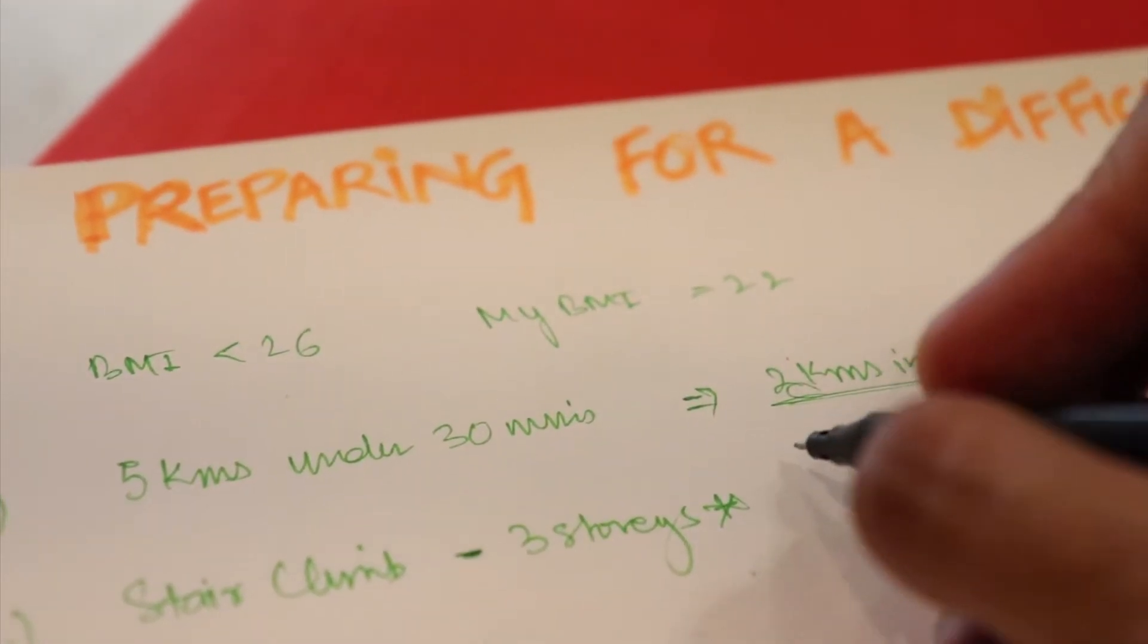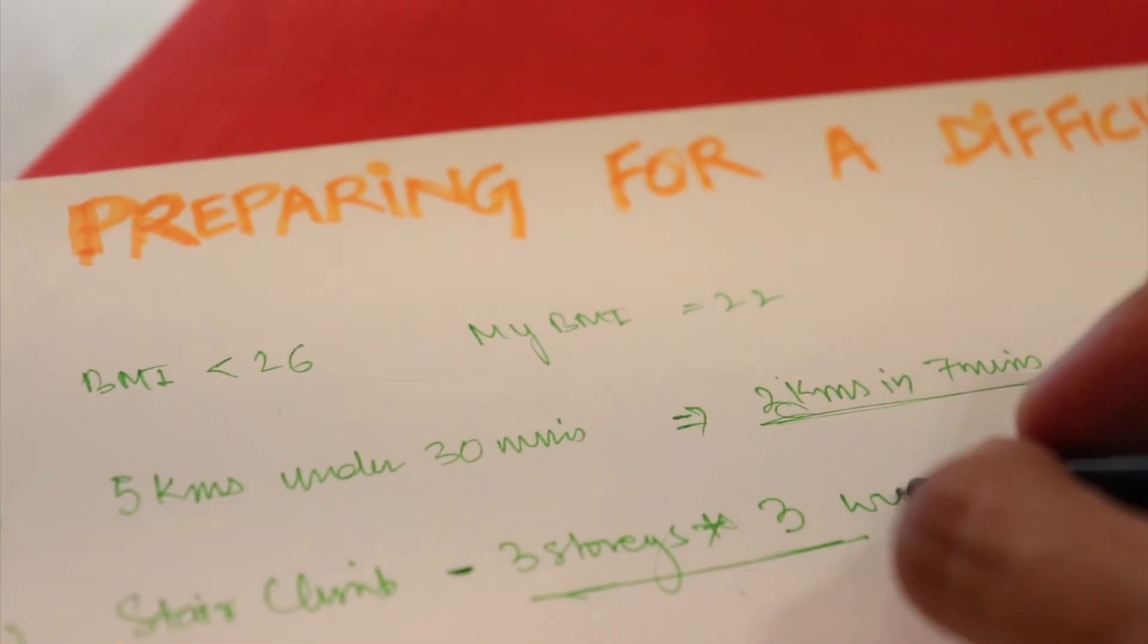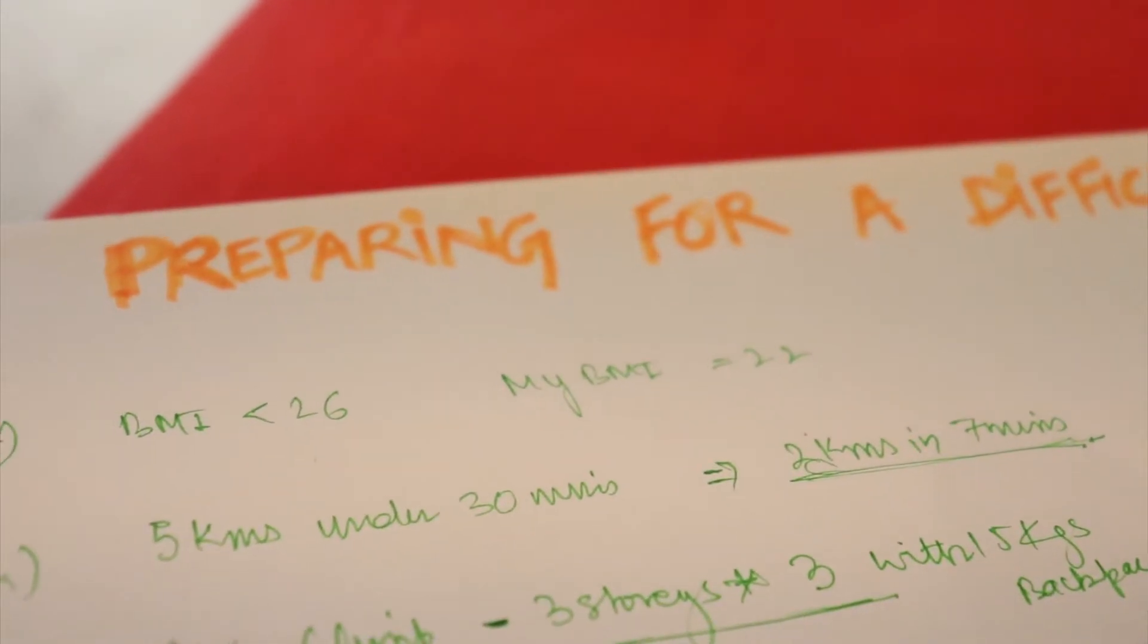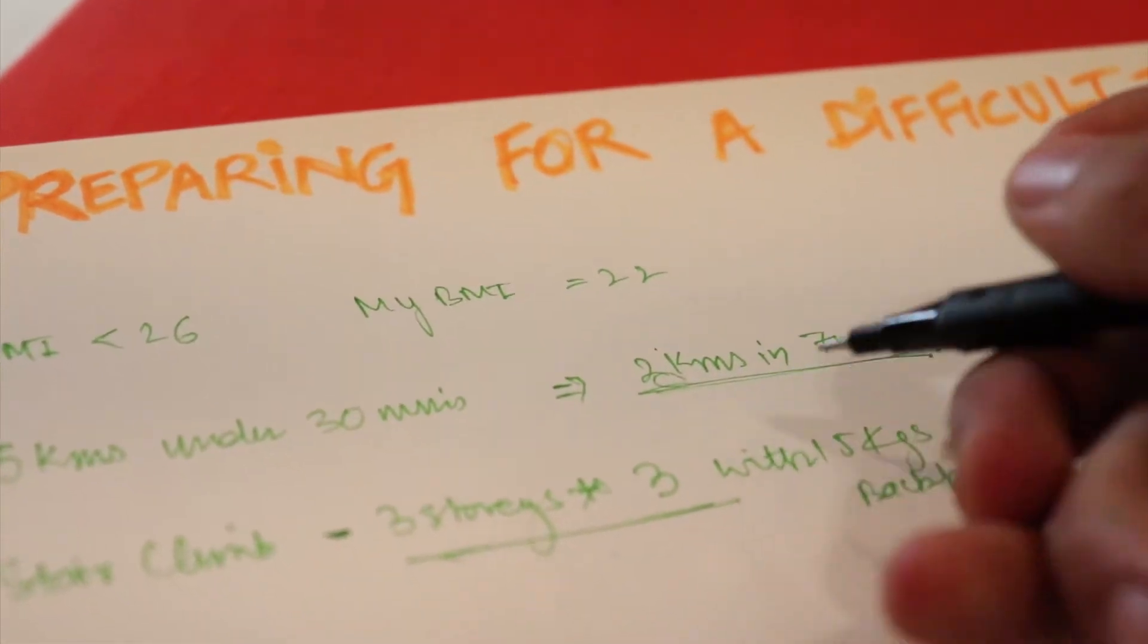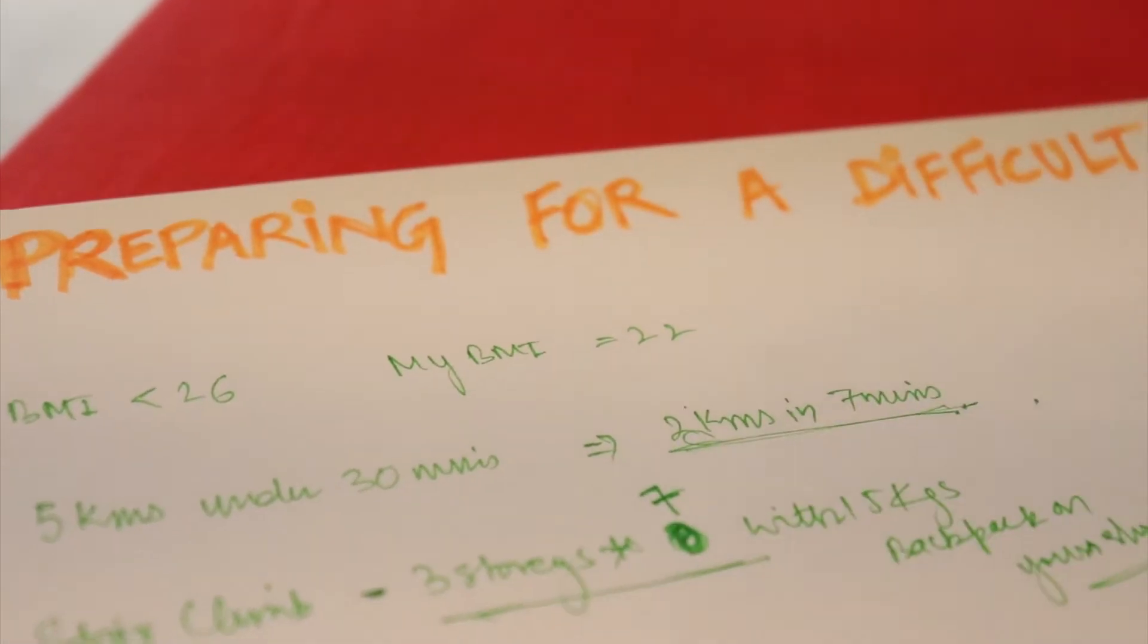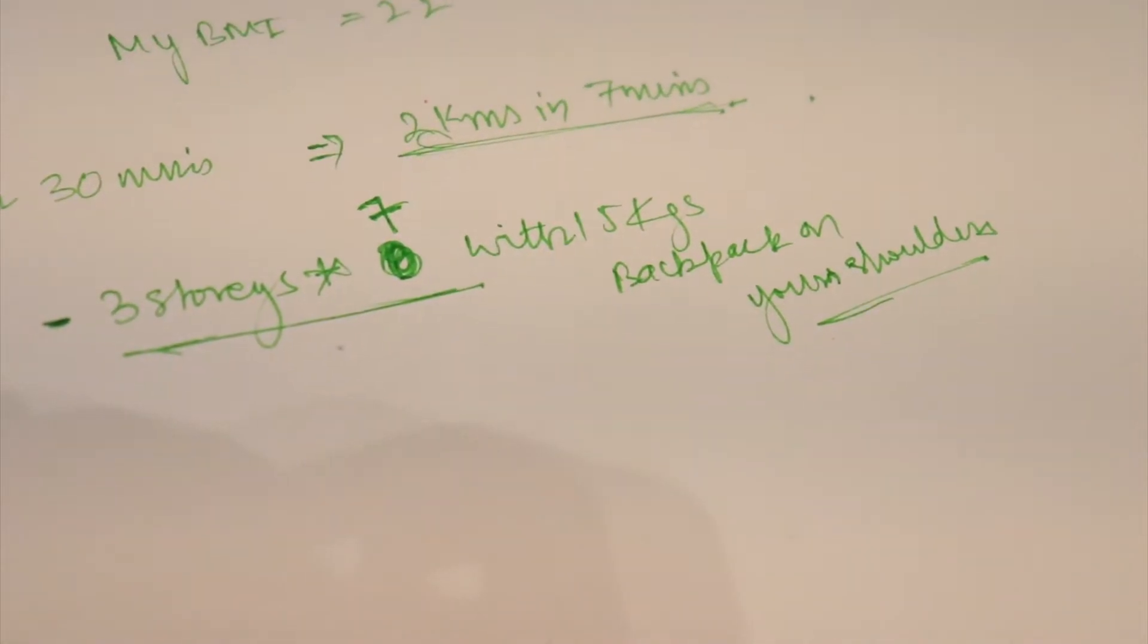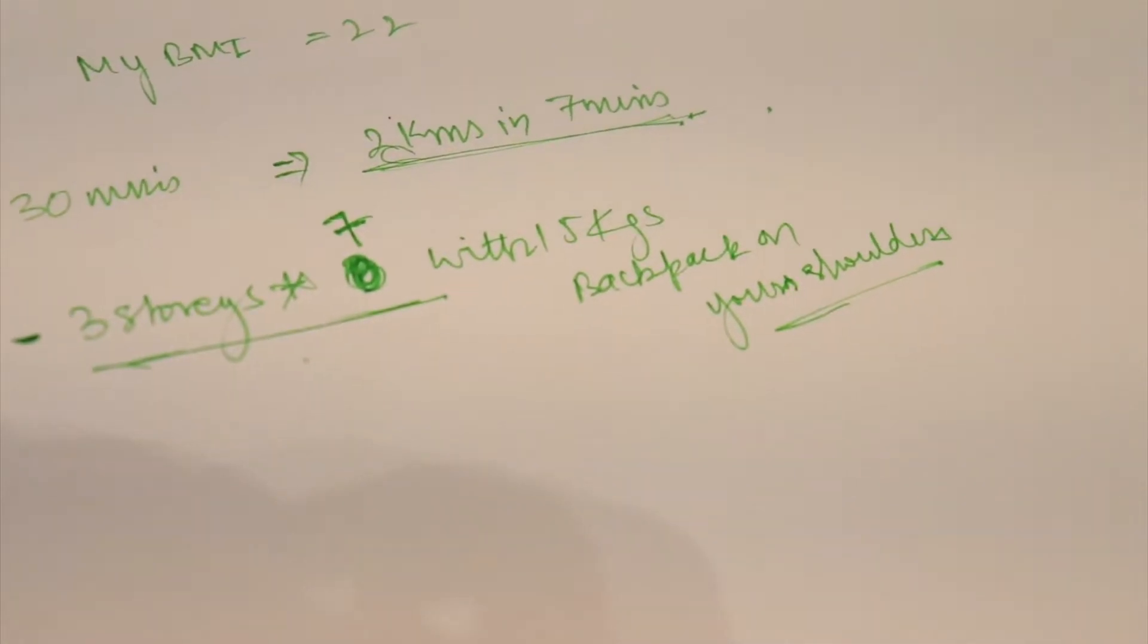Three times a day. Three stories, three times a day with 15 kg backpack on your shoulders. Actually, three times is less. Just boost it to seven times. You should be able to do a three-story stair climb seven times a day with 15 kg of backpack on your shoulders. This should be at least your goal before going toward a difficult trek.